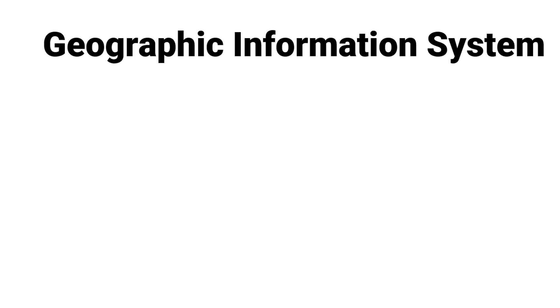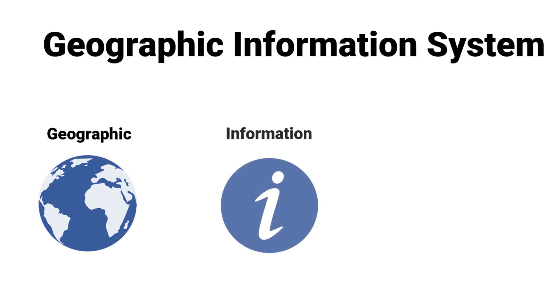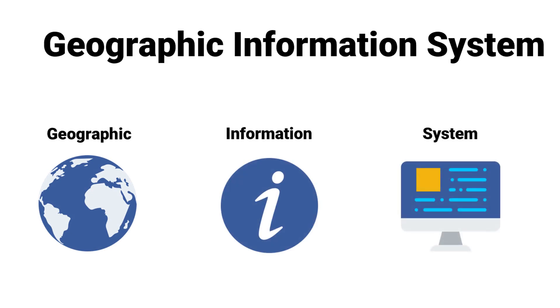GIS is made up of three terms: Geographic, Information, and System. Geographic means location-specific data. Any object on the earth can be associated with geographic coordinates, which we know as latitude and longitude.